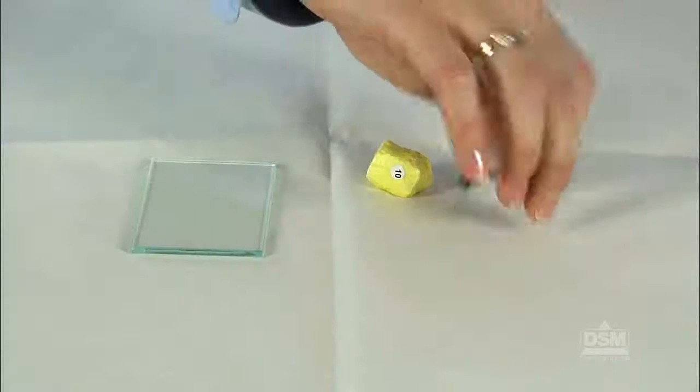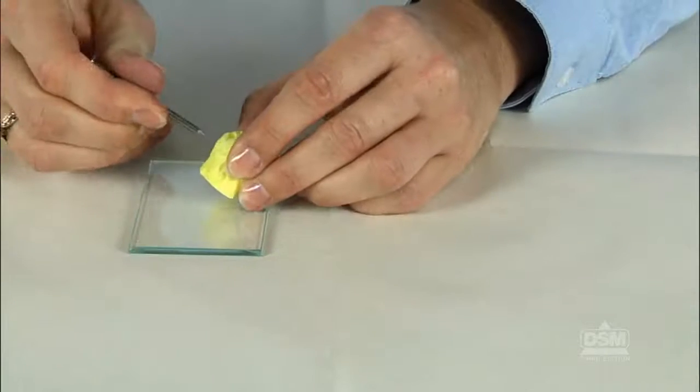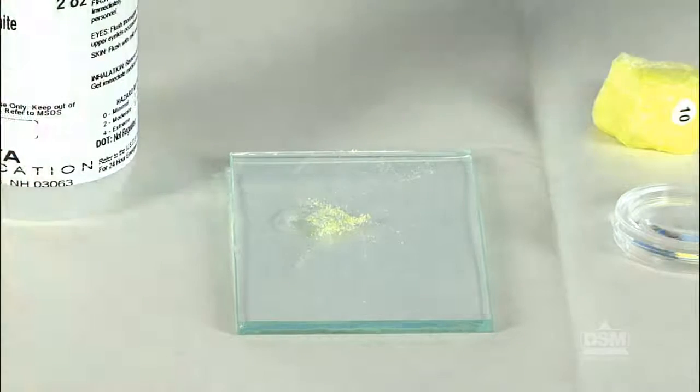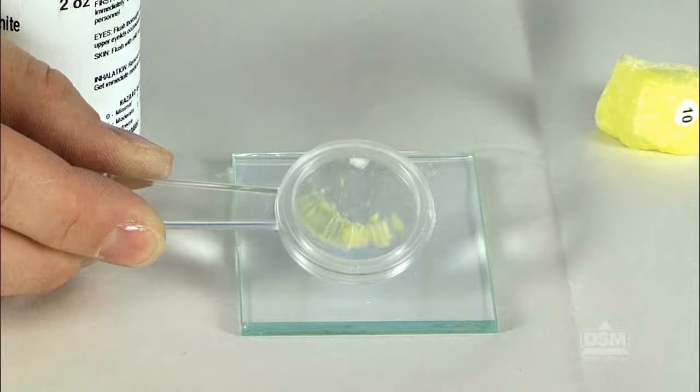Demonstrate for the class the procedure for the acid test. Be sure to choose a specimen that is soft enough to scratch. Use a nail to scratch a small amount of mineral powder onto a glass plate, and then place a drop of vinegar on the powder. Finally, use a magnifier to observe any reaction.